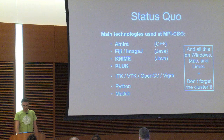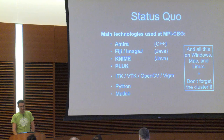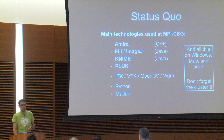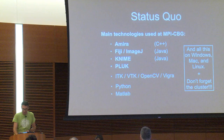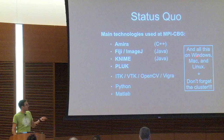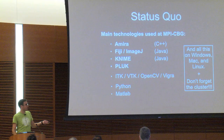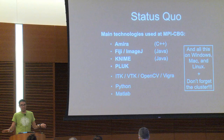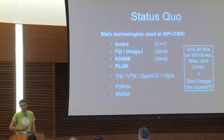The status quo at the Max Planck Institute in Dresden is that we use a ton of different things: Amira, Fiji, ImageJ, KNIME, and even obscure things like Pluck. We use frameworks like ITK, VTK, OpenCV, Vigra; people use Python and MATLAB. All of this works on Windows, Mac, and Linux, and since we work with gigantic data there's also the cluster. When a new PhD student comes in, it's really overwhelming initially.